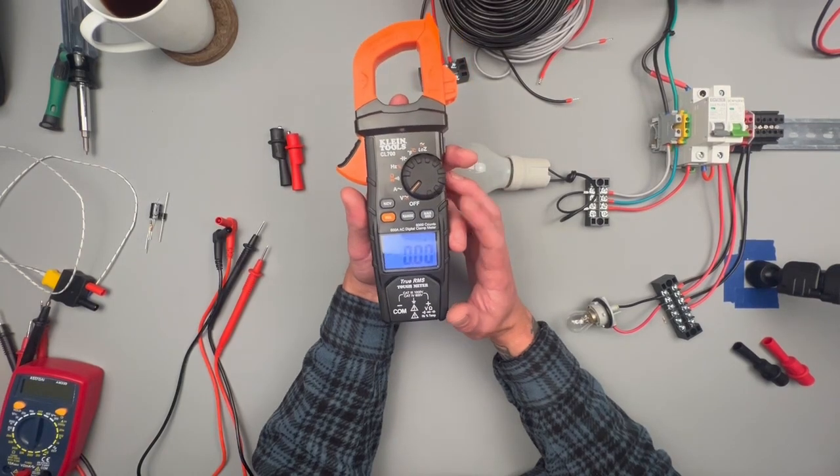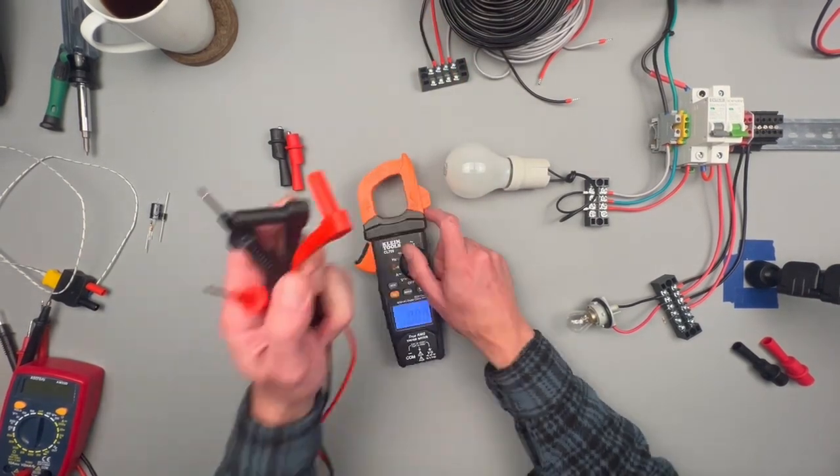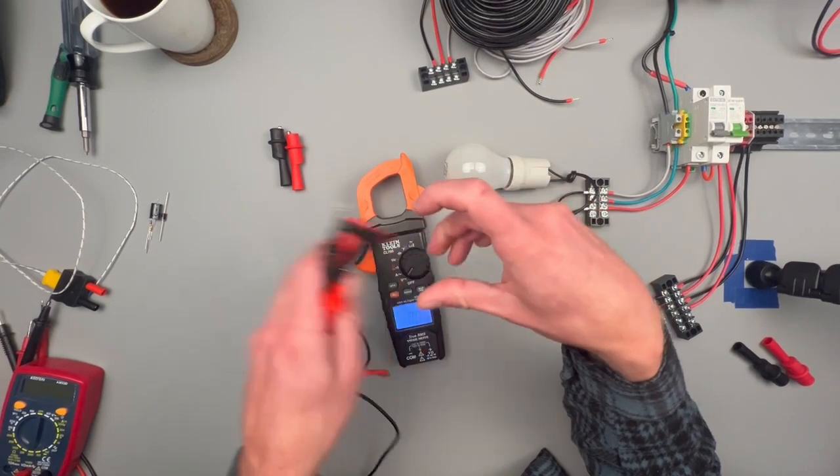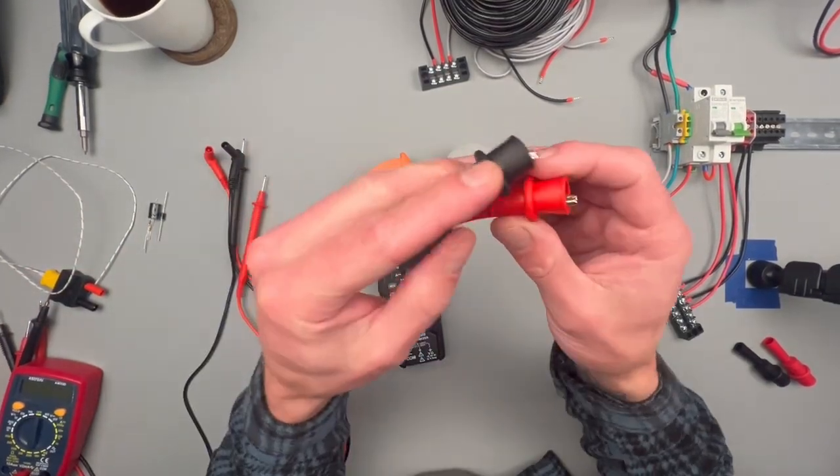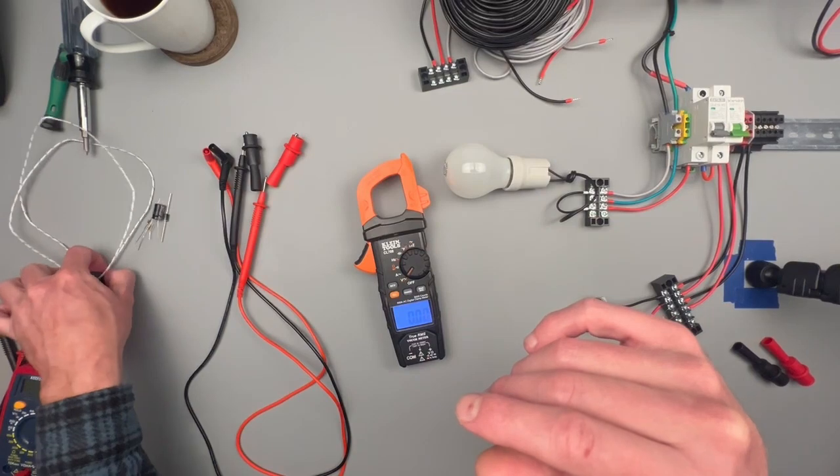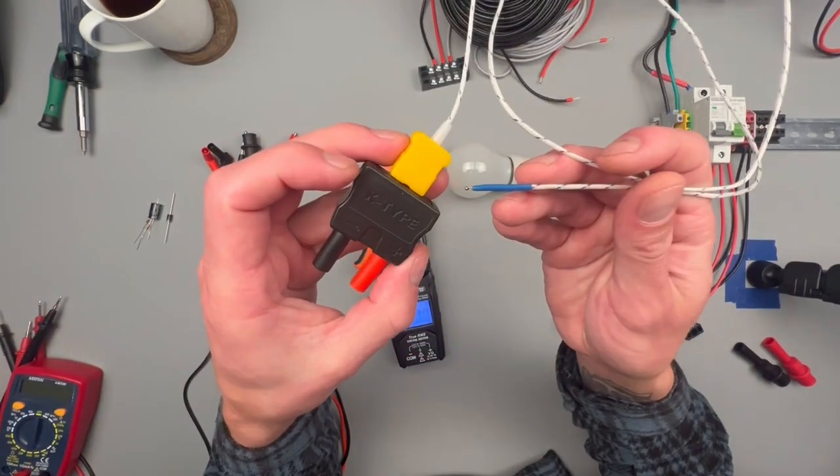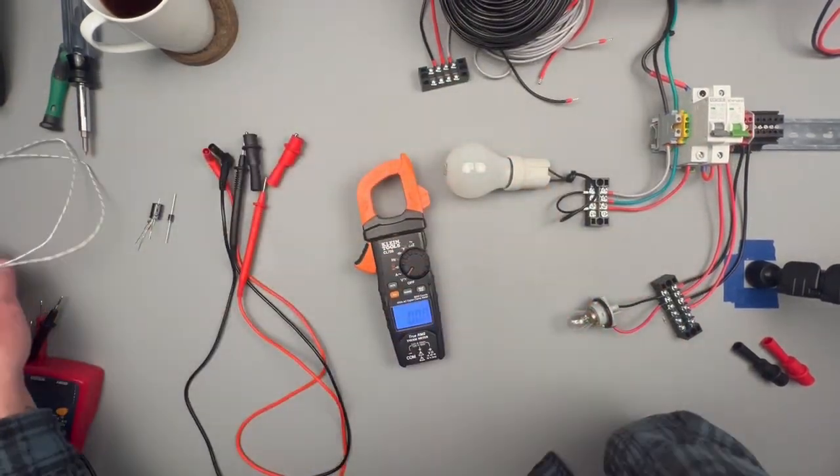So we're just going to go ahead, go through the wheel. It does come with a decent set of double insulated 10 amp rated leads, as well as 10 amp rated alligator clips, and a K-type thermocouple probe here, as well as a little carrying case.